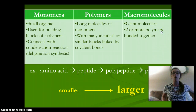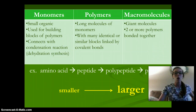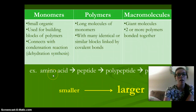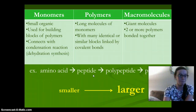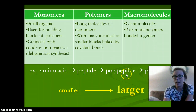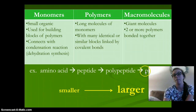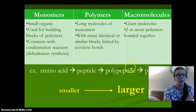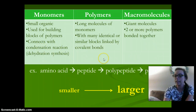An example for our protein would be an amino acid. Amino acids bound together make a peptide, and then peptides bound together make polypeptides, and then polypeptides bound together make a protein. They're bound together using a condensation reaction or dehydration synthesis.